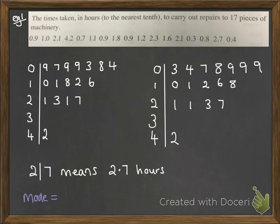From here, we can pick out the mode. Those three nines there at the top makes our mode of 0.9 hours.